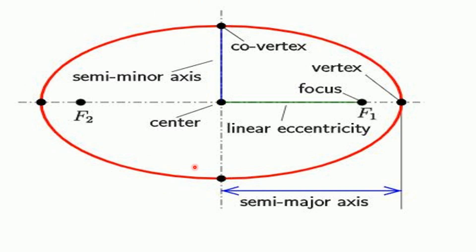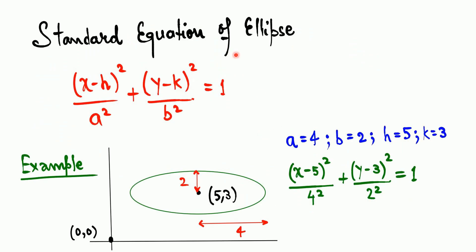The red curve you see is an ellipse. The labeled points are the vertex, co-vertex, center, and focus. The distance from the center to the focus is called the linear eccentricity. The general standard equation for an ellipse with center (h, k) is: (x − h)²/a² + (y − k)²/b² = 1. For example, if the center is (5, 3), the semi-major axis is 4, and the semi-minor axis is 2, then h=5, k=3, a=4, b=2.